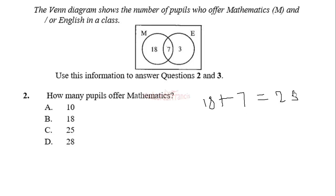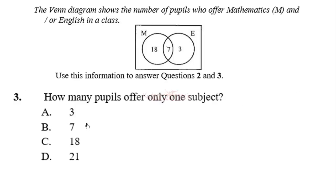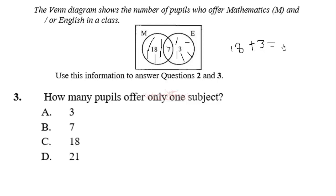Those who offer mathematics: if you offer both mathematics and English, it means you are still offering mathematics. So the correct answer is C. Then, how many people offer only one subject? Mathematics only is this region, English only is this region. So only one subject will be mathematics only plus English only, that will be 18 plus 3, which gives you 21. So the correct answer is C.